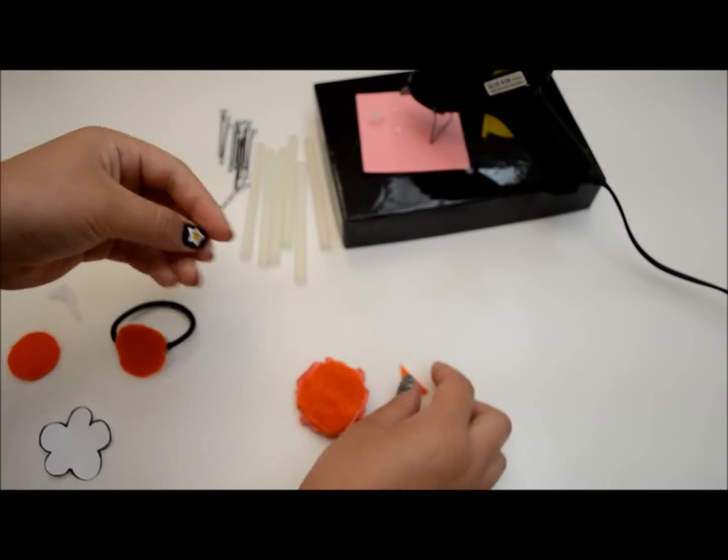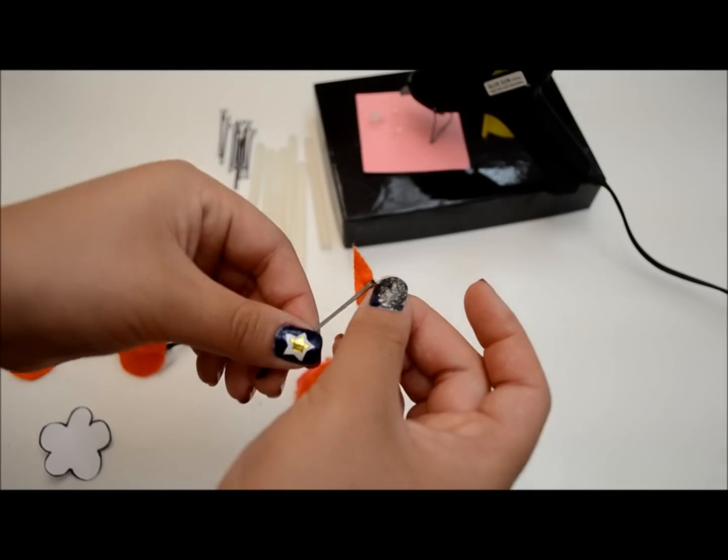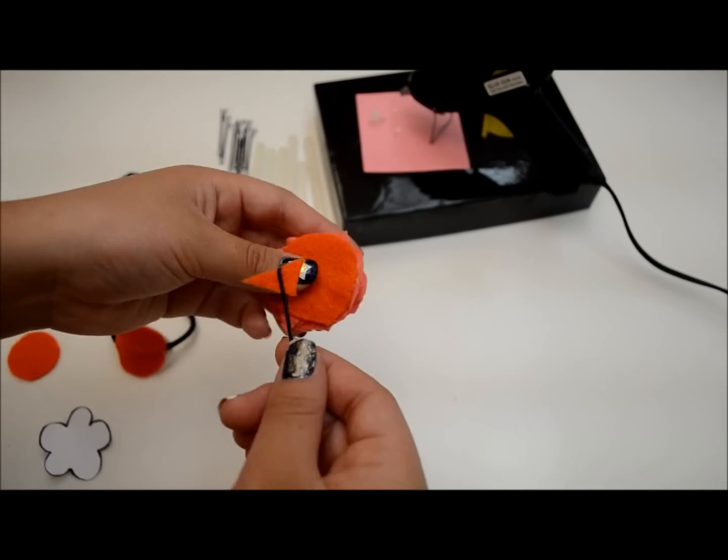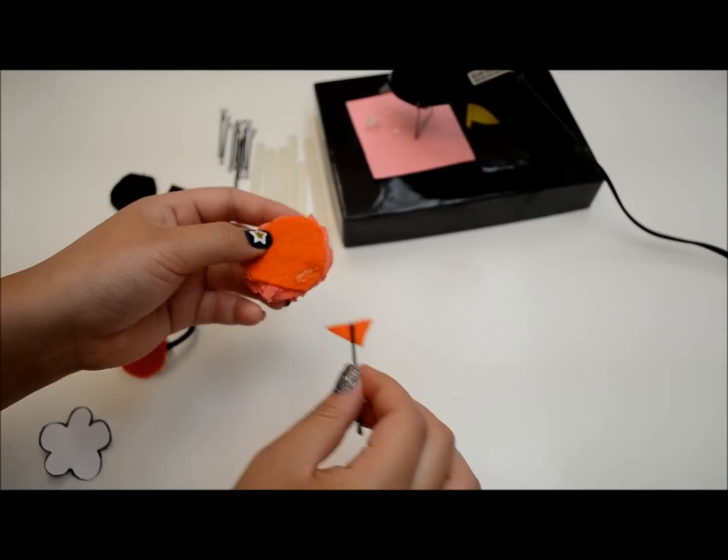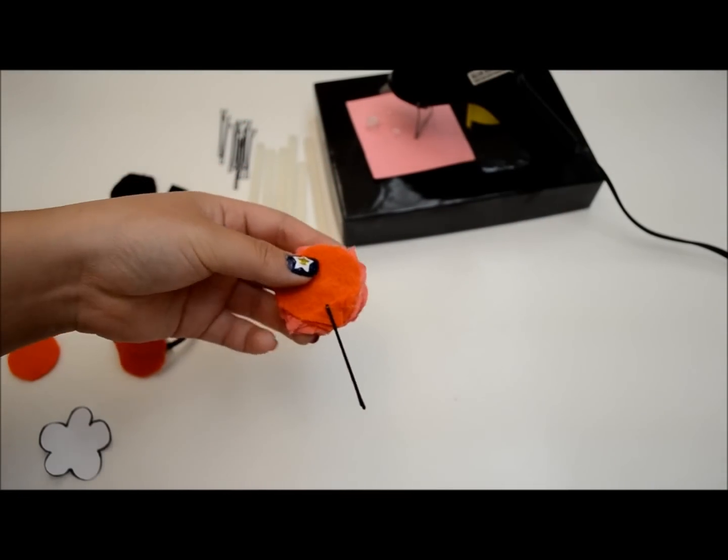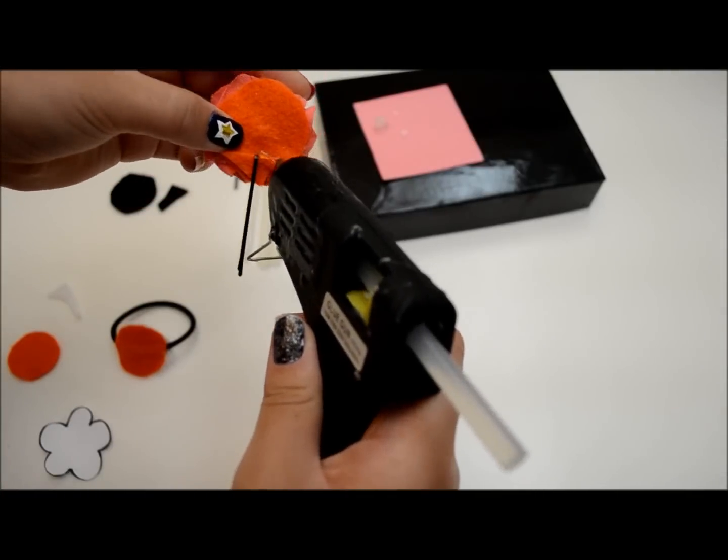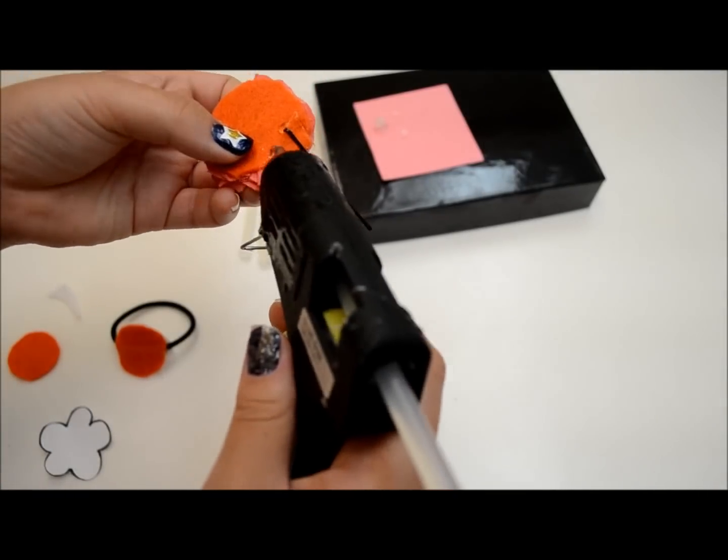To make this a hairpin, first slide the triangle felt onto the pin. Next, add some glue onto the back of the flower and place the felt triangle on top. You can add some more glue around the triangle to make it more secure.